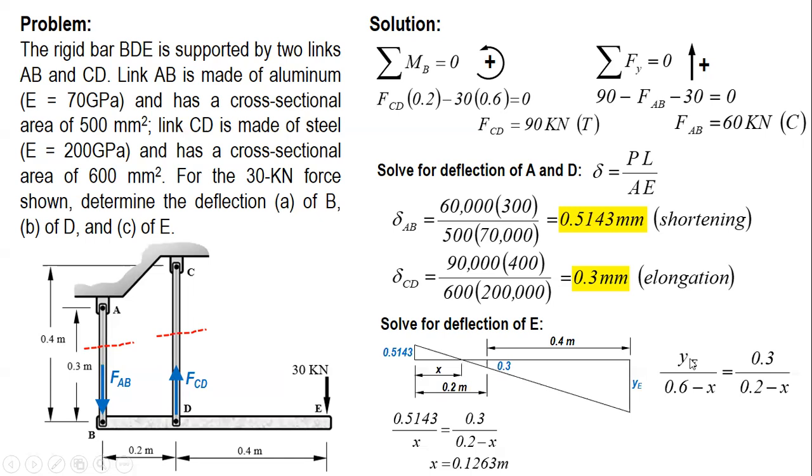Y sub E over 0.6 minus X equals 0.3 over 0.2 minus X, or 0.5143 over X. And you substitute 0.1263 here and we can solve for Y sub E: 1.93 millimeters. That's the final answer. Thank you for watching.